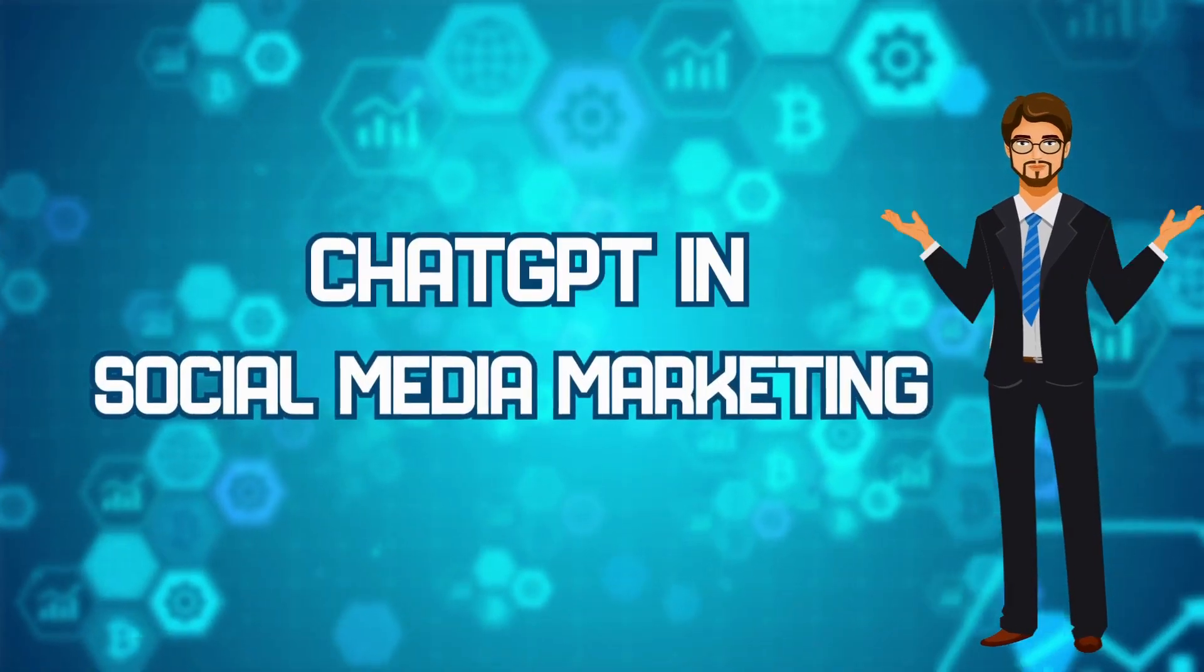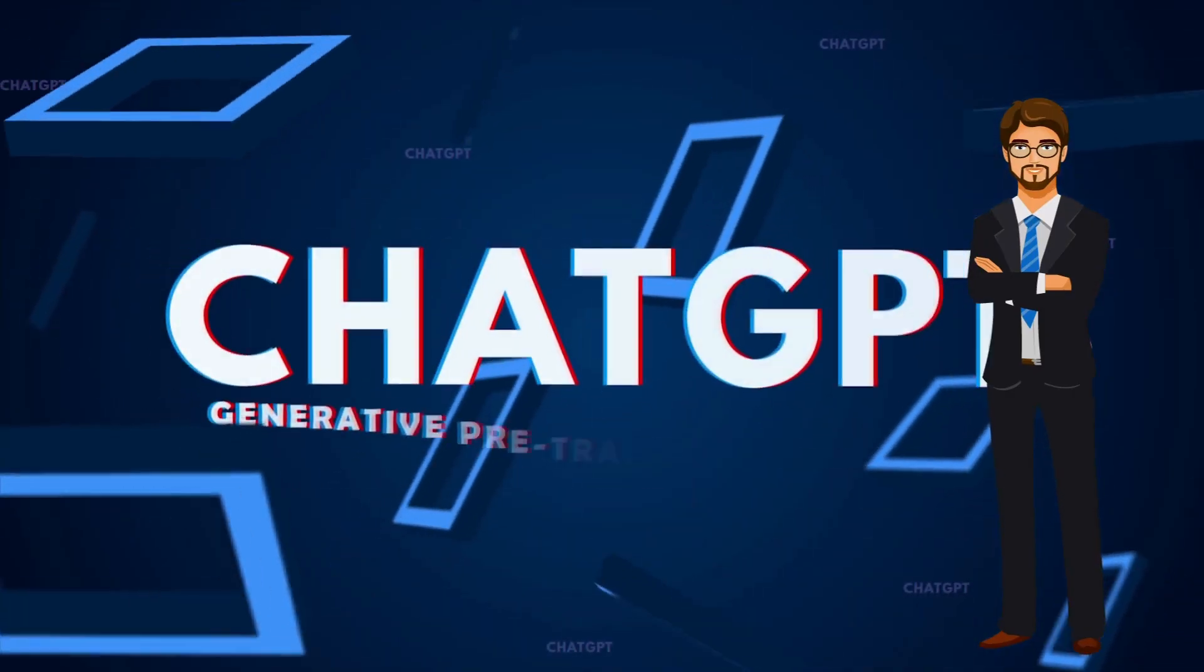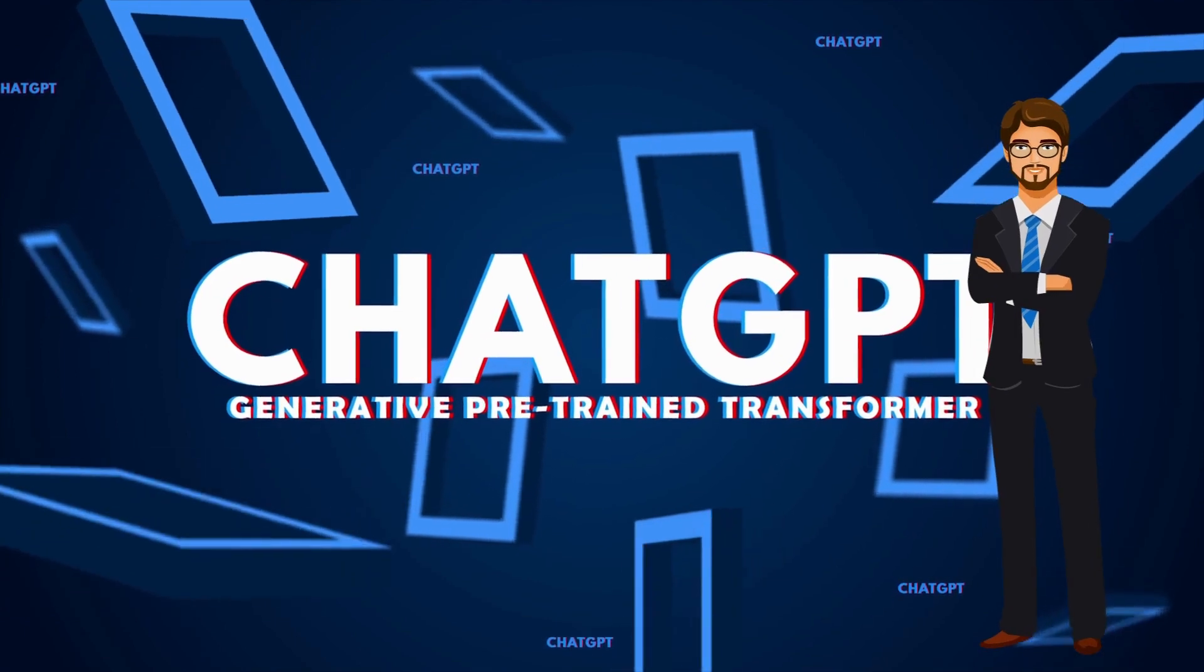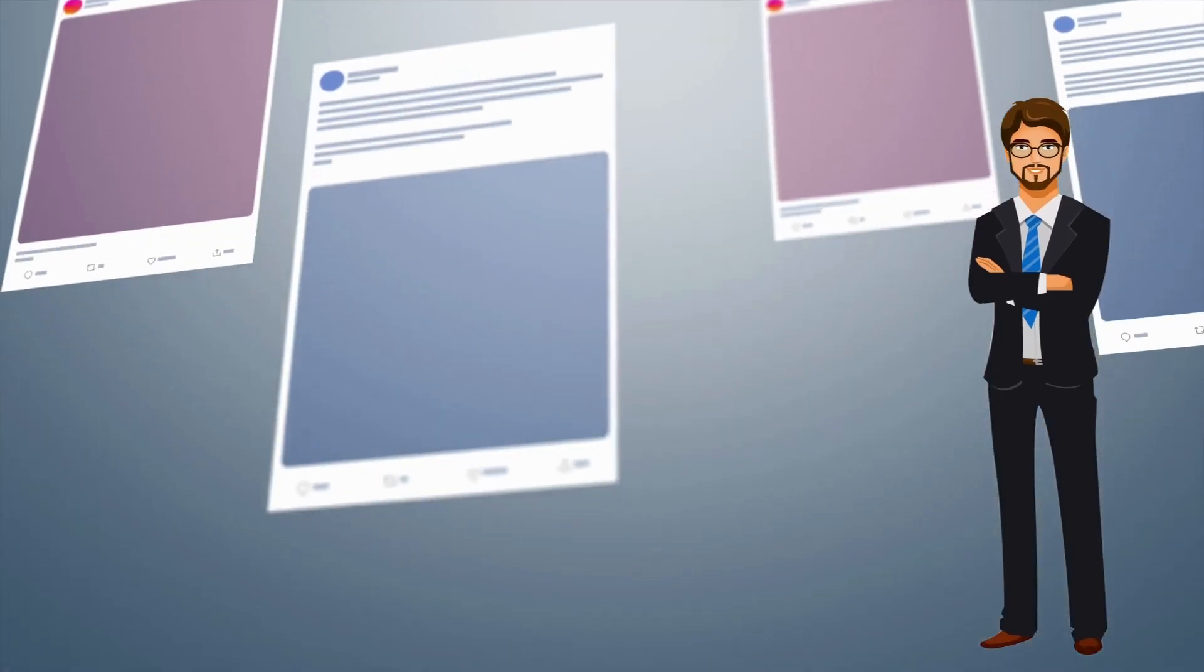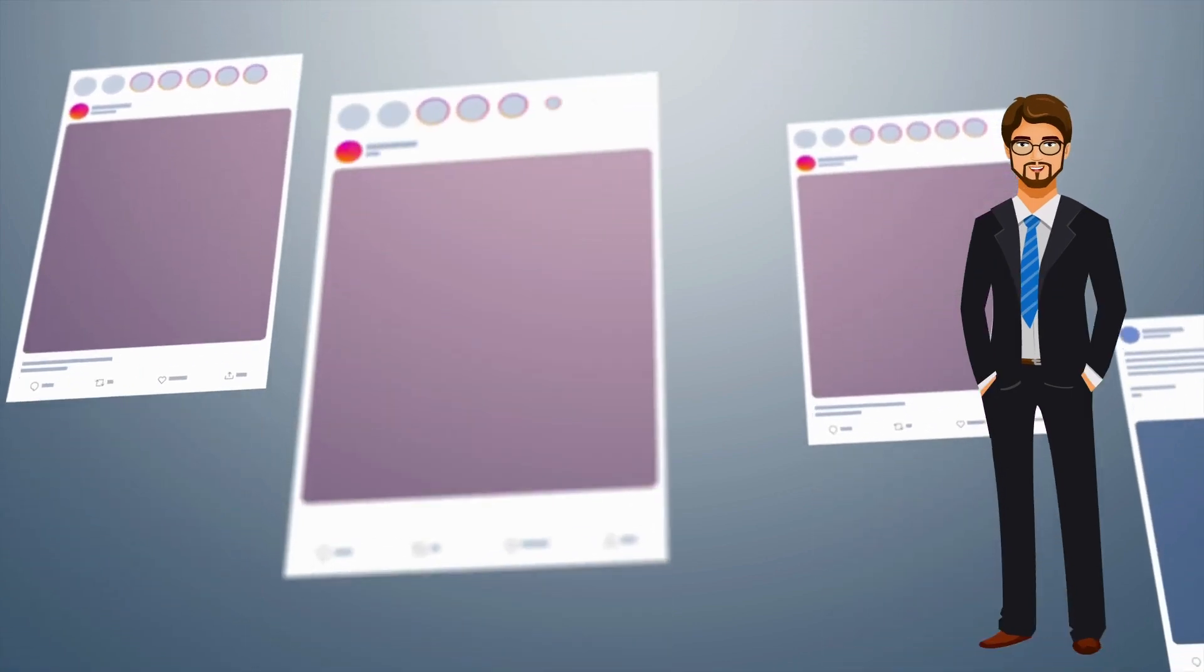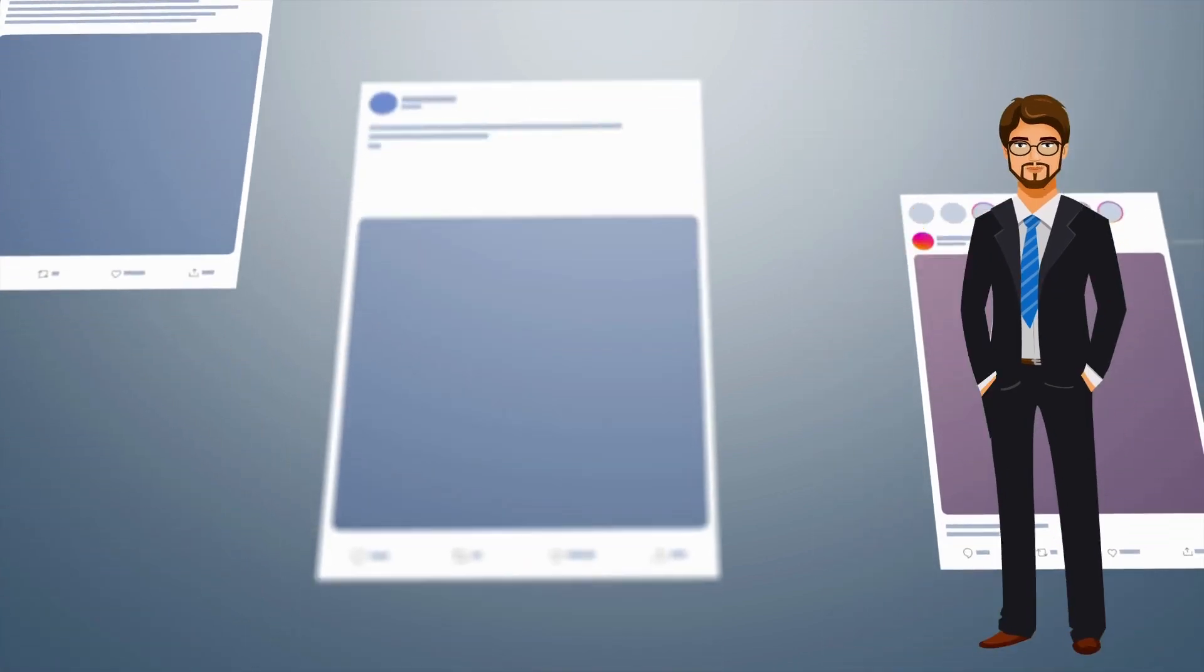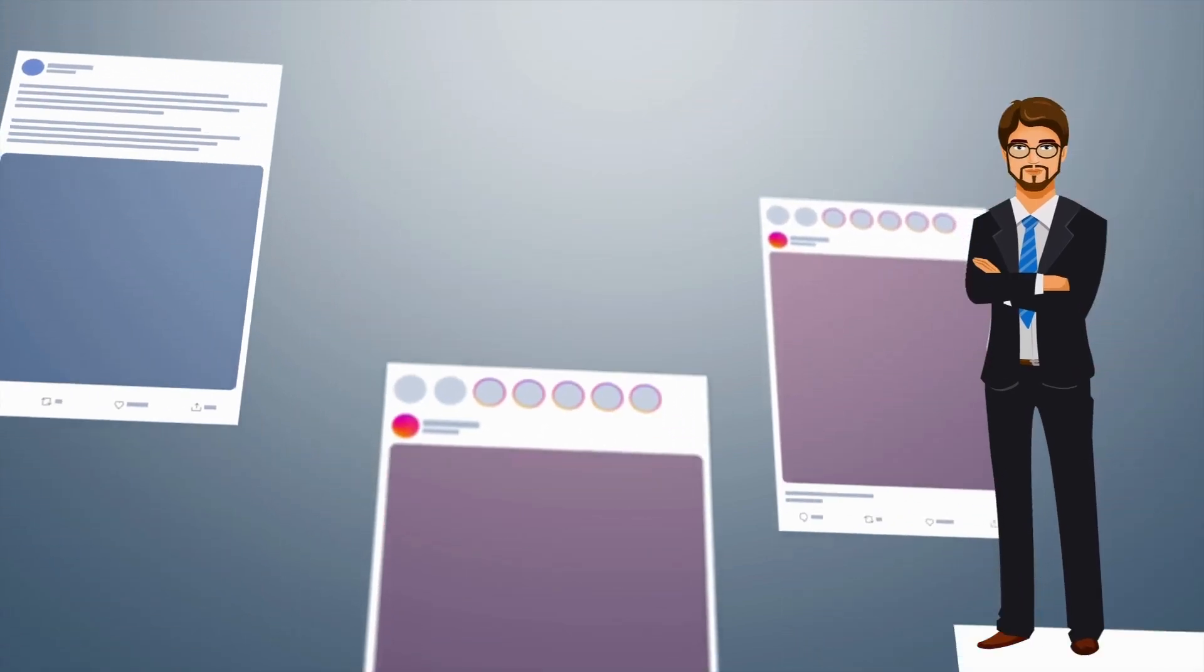ChatGPT and social media marketing. A brand could now use ChatGPT to answer customer comments on social media, analyze the customer's activity to understand their interests, and this helps it to deliver a response that is tailored to their specific needs.